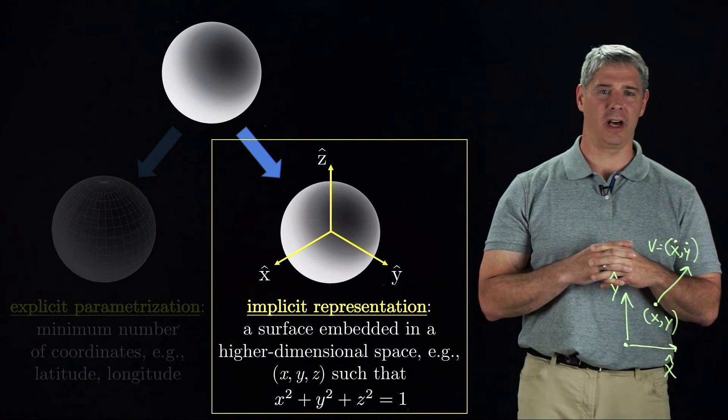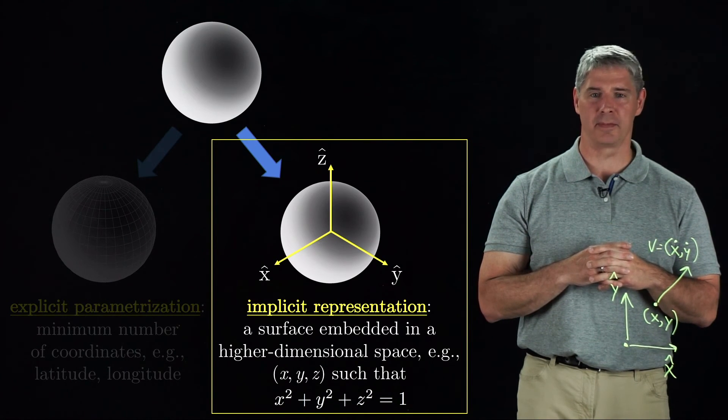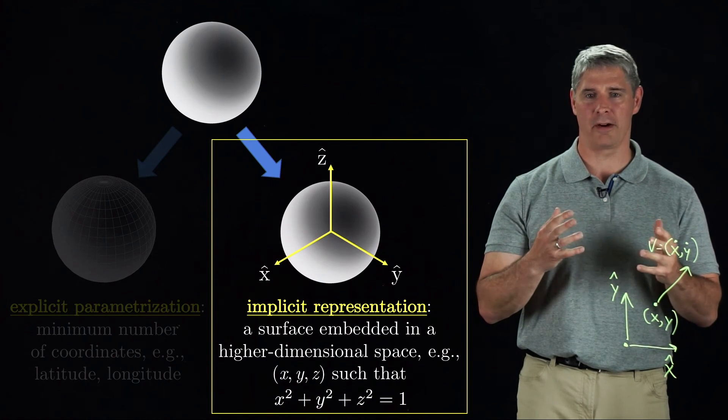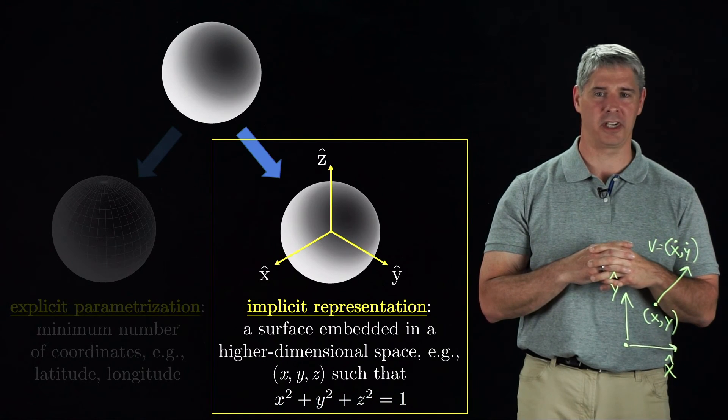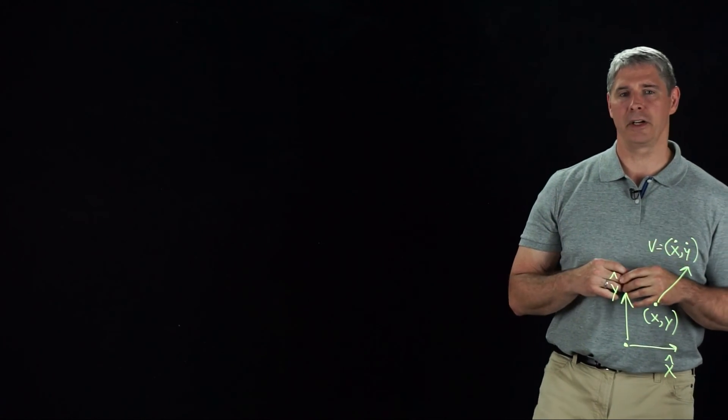In summary, we typically do not represent configurations using a minimum set of coordinates, and we typically do not represent velocities as the time rate of change of coordinates.